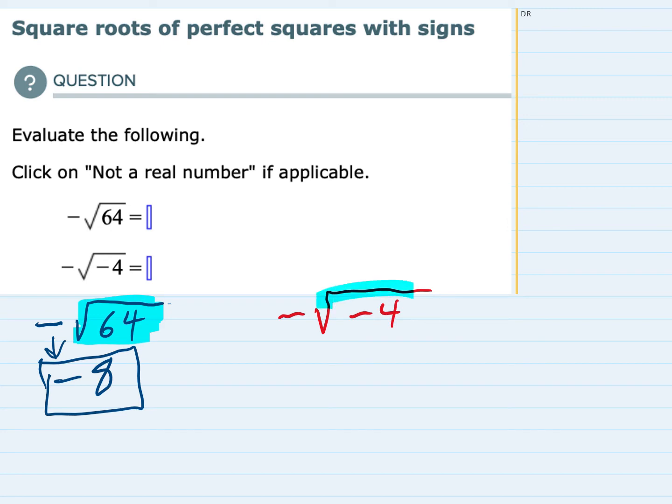So if we were starting with the square root of negative 4 we would again be asking ourselves what number times itself equals a negative 4. And in this case there aren't any real numbers that I can multiply with themselves and get a negative 4.